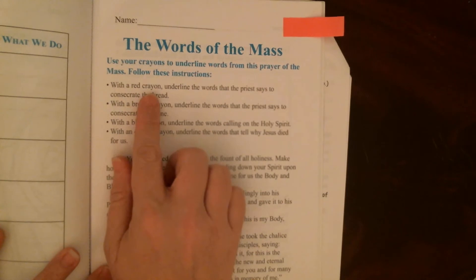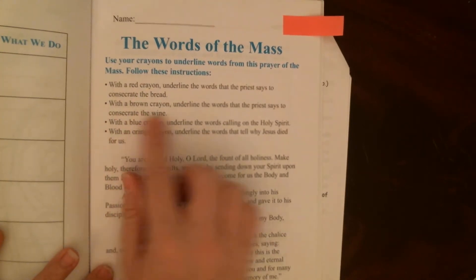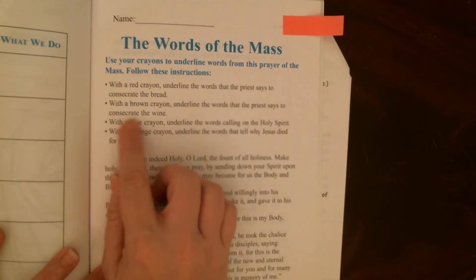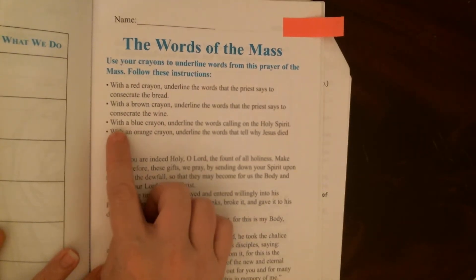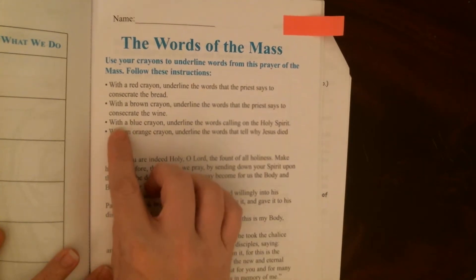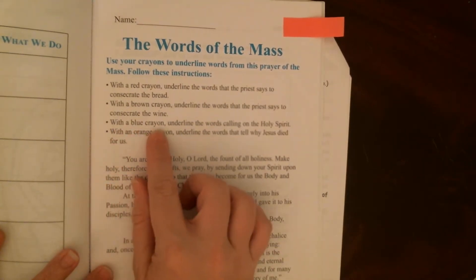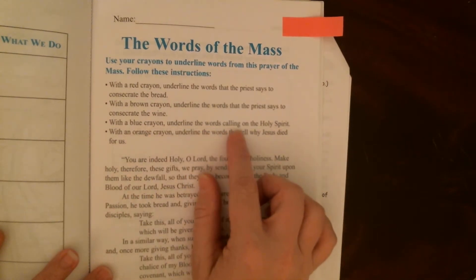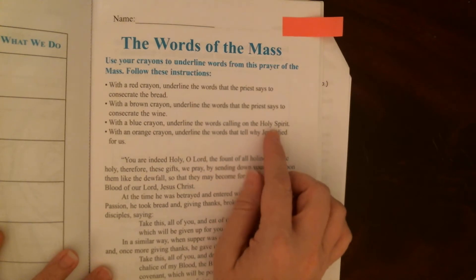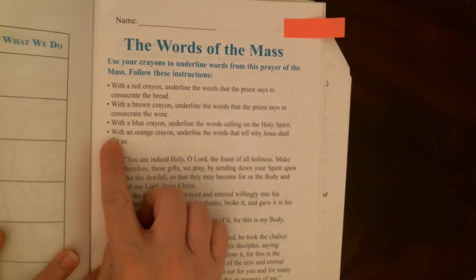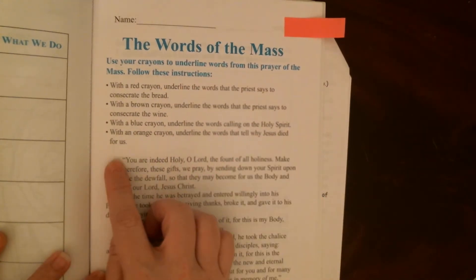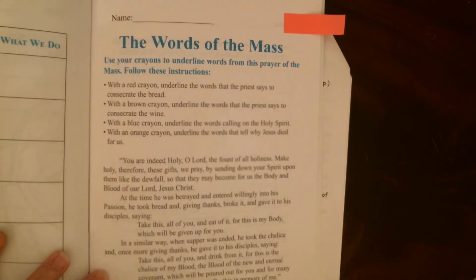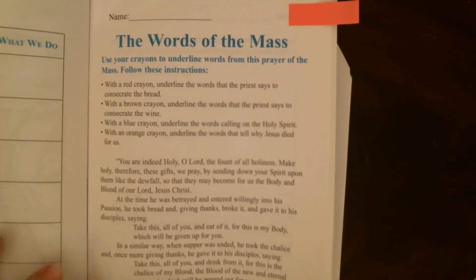Underline those words with red. Then with your brown crayon, underline the words that the priest says to consecrate the wine — think about how that wine becomes the blood of Christ. Then with your blue crayon, find the words where the priest calls on the Holy Spirit to join us. And then with your orange crayon, underline the words that tell why Jesus died for us. We should all know why Jesus died for us — we've been talking about that all through our Easter season.